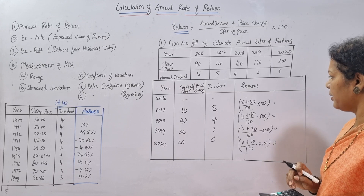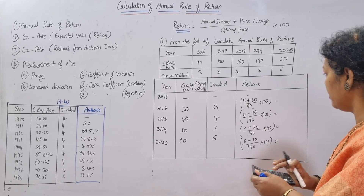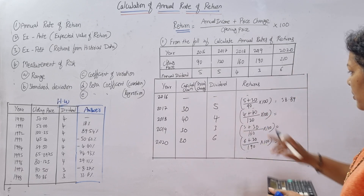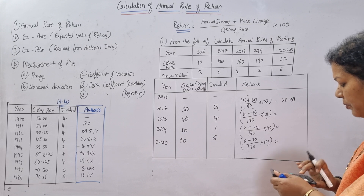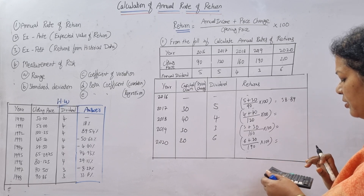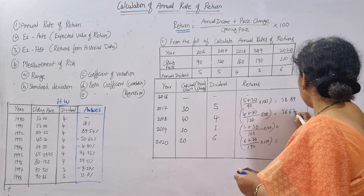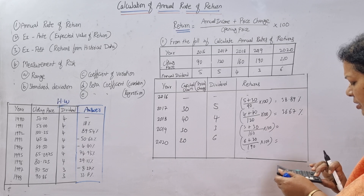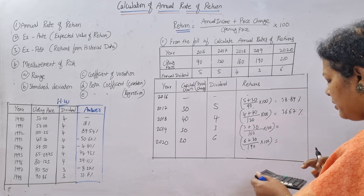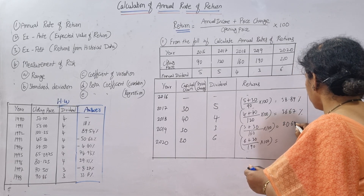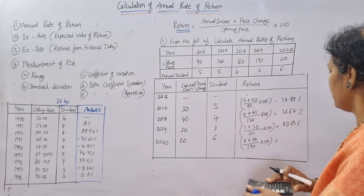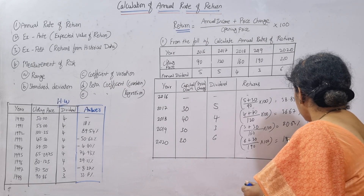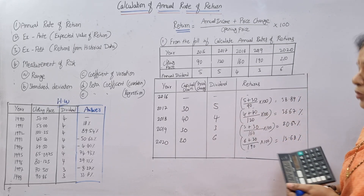Using the calculator: 35 × 100 / 90 = 38.89%. For the next year: 44 × 100 / 120 = 36.67%. Then: 33 × 100 / 160 = 20.63%. And the last: 26 × 100 / 190 = 13.68%. These are the percentage returns you can expect for each year.